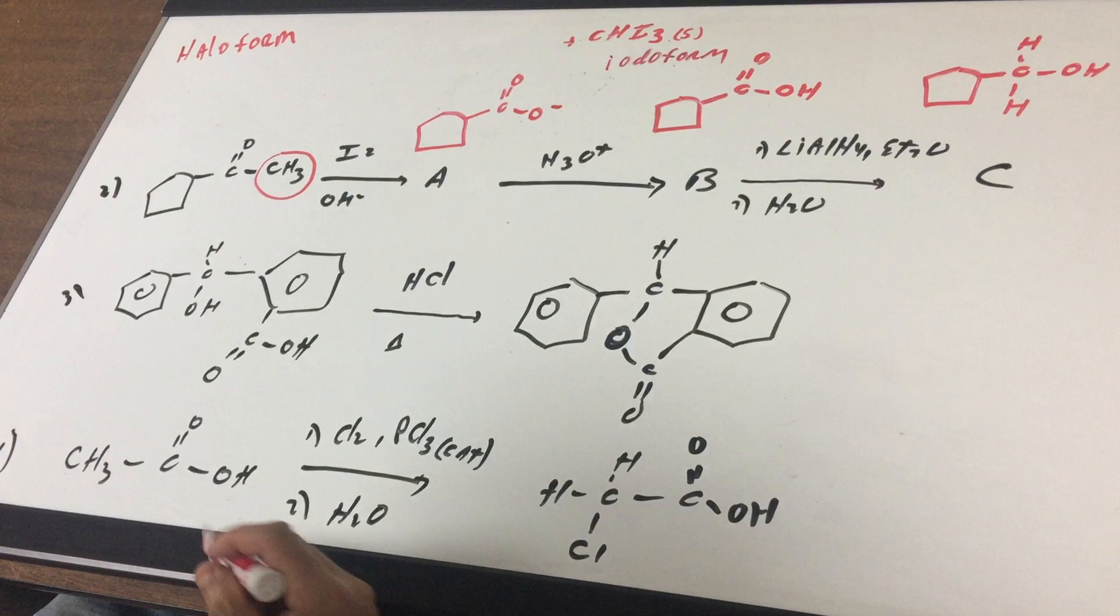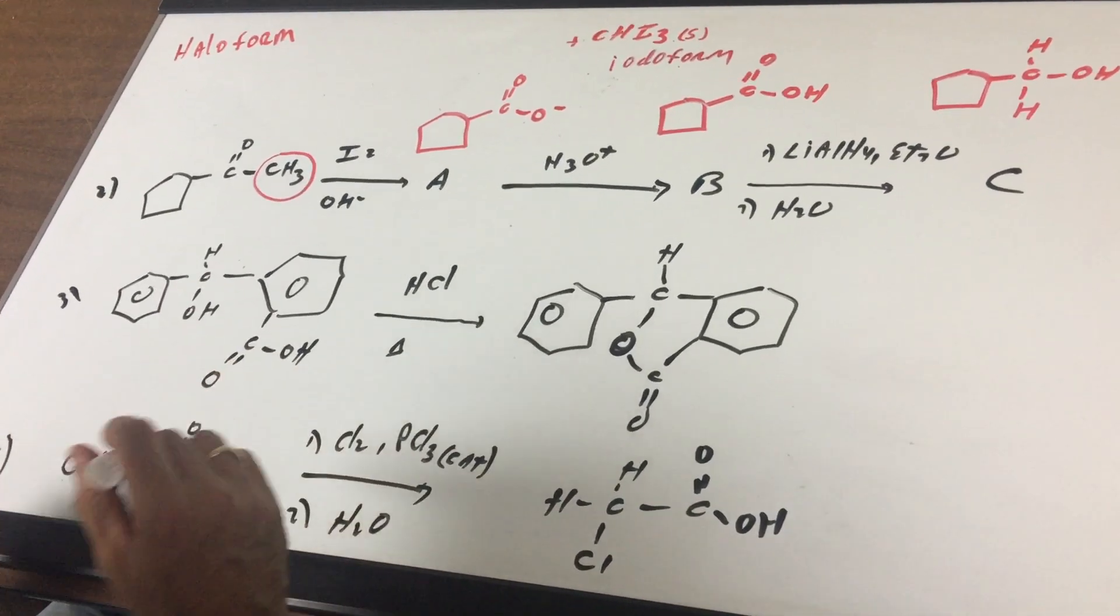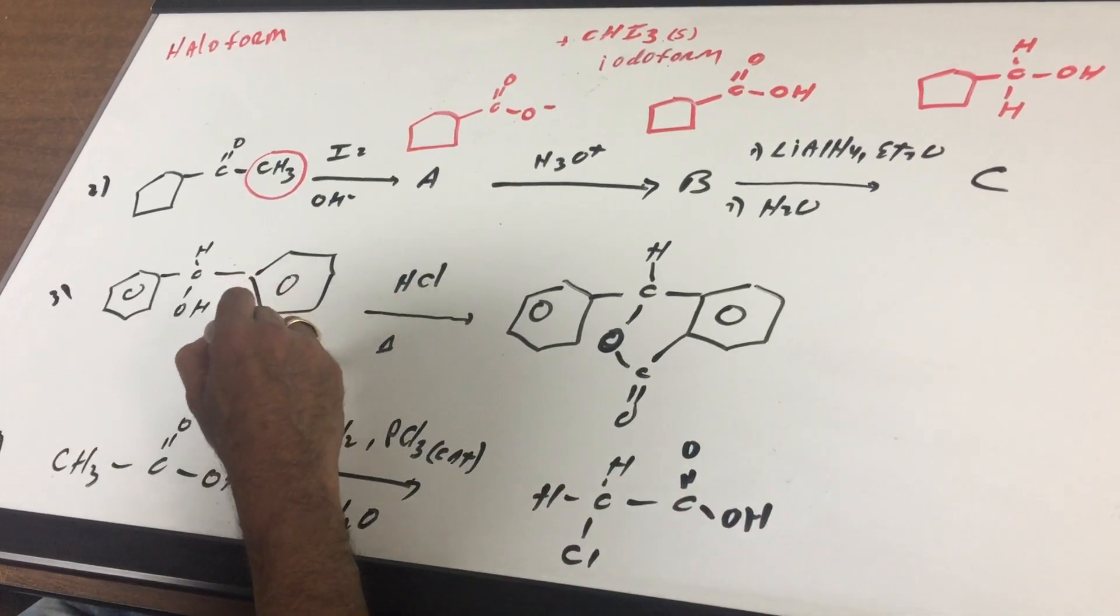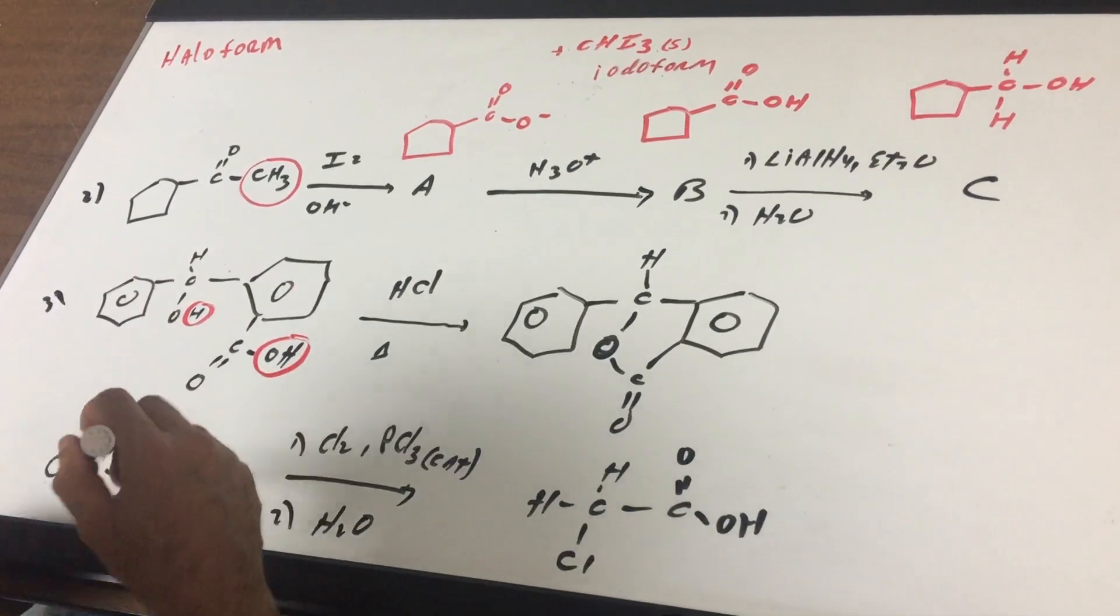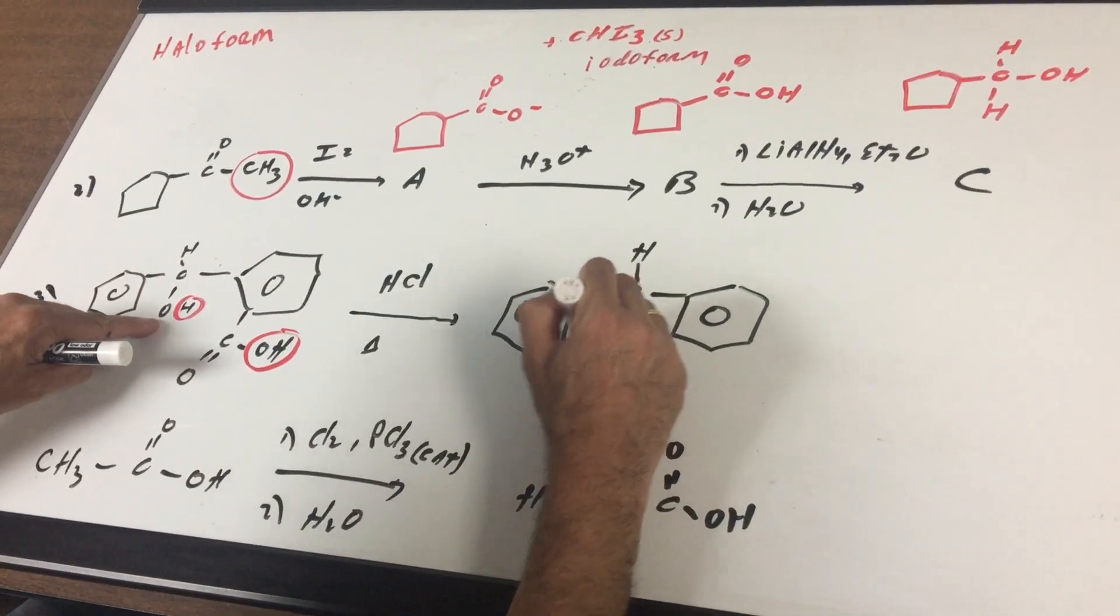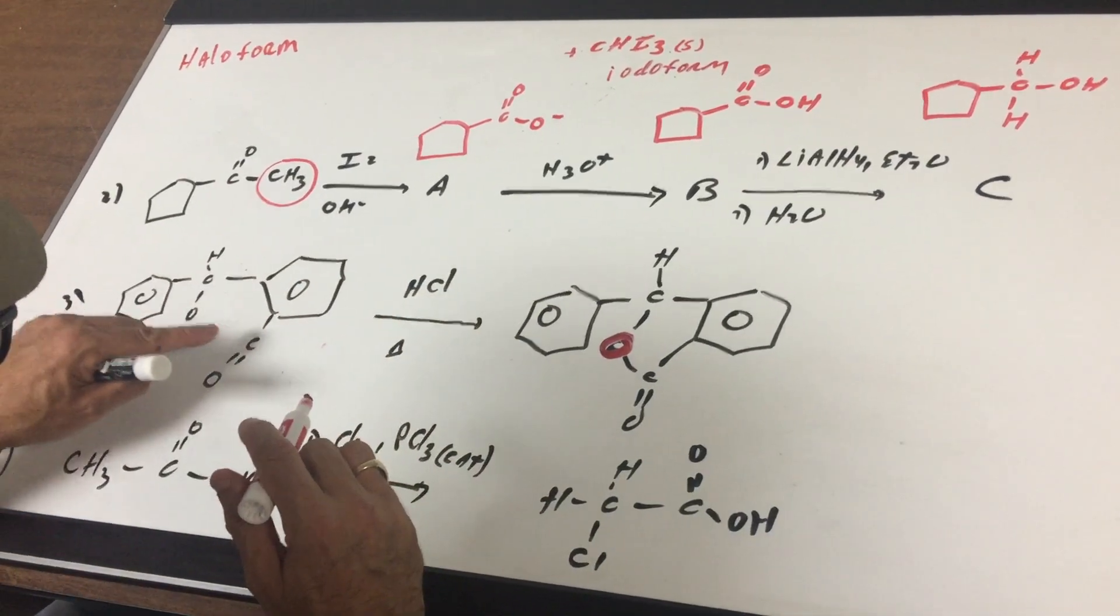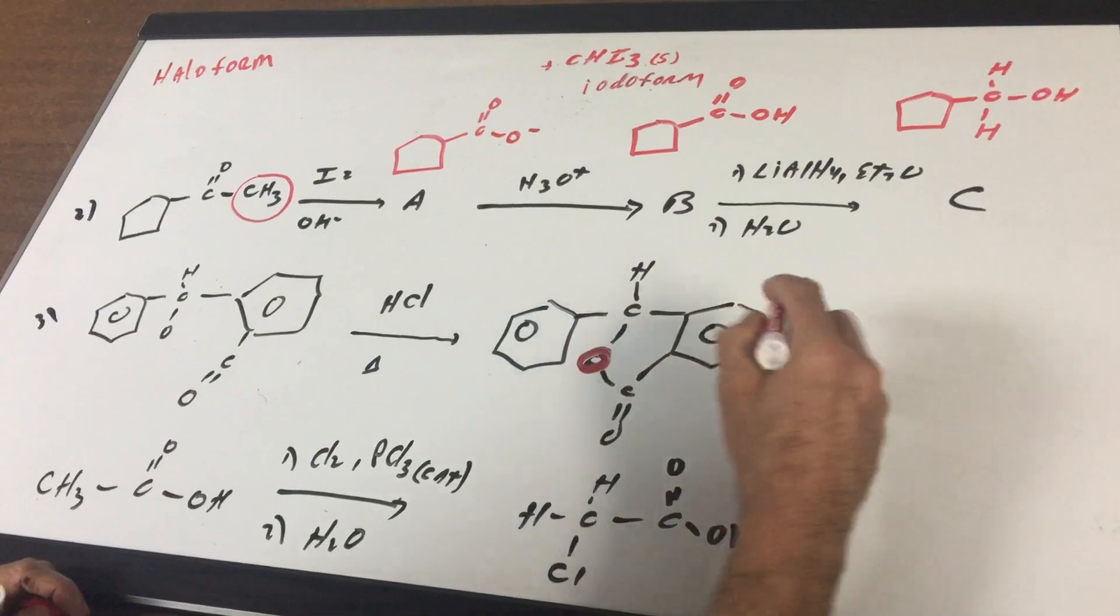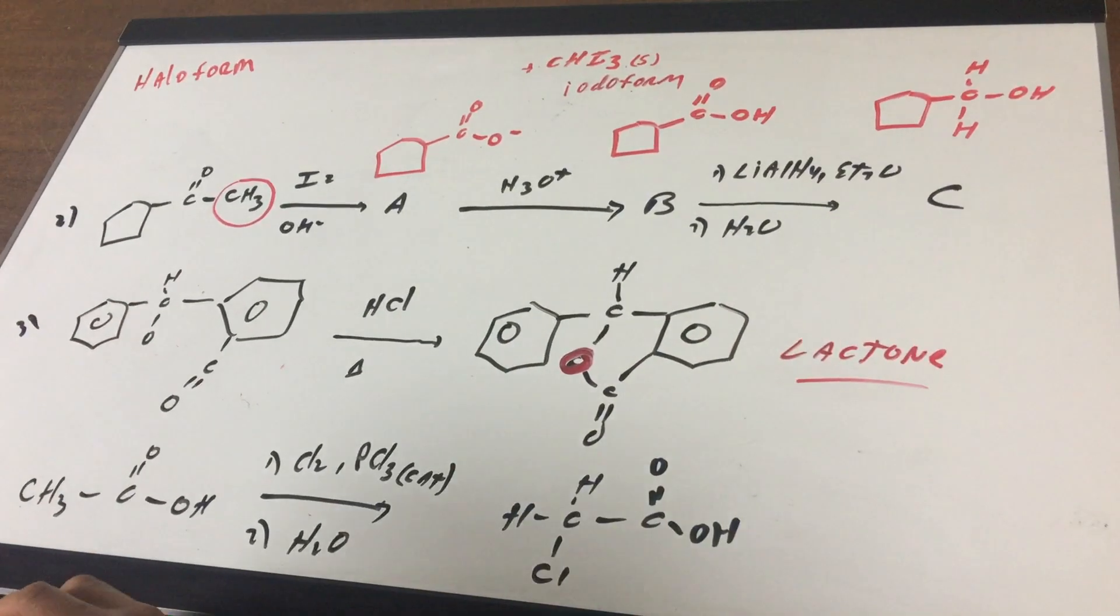Number three is an interesting question. Now whenever you see an acid and an alcohol, usually they're going to join together to form an ester. So what you're going to do is you're going to take off this OH and this H. So if I have the O here, you can see this O is here, and then if you took this off and this off and you joined them together, you would come up with this, and this is a cyclic ester and we would call this a lactone.